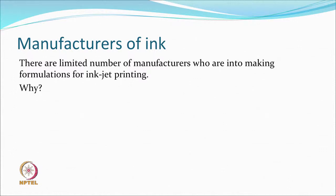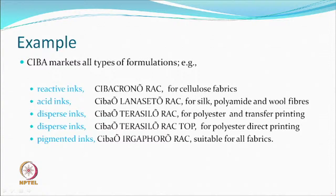Other than the type of color and the chemistry of the color, there is a formulation which, as mentioned, could depend on the type of print head being used, and therefore manufacturers may make specific recommendations. Some big companies make all types of inks — reactive ink for cellulosics, acid inks, disperse inks. Disperse inks for transfer printing are still relevant since transfer printing still exists. So you can print on paper or directly on polyester, and pigment inks are also available — all these formulations are available.